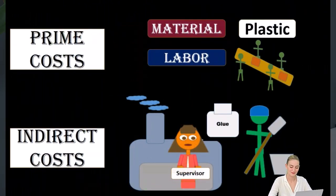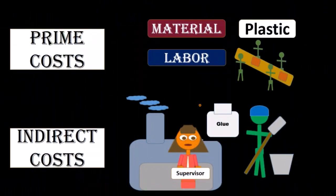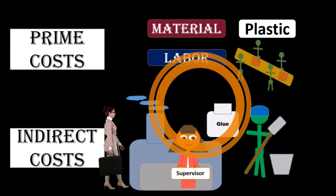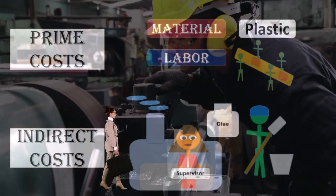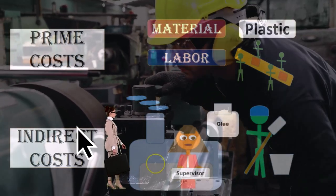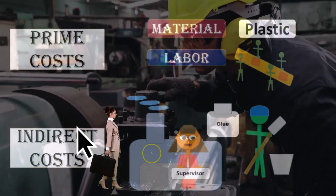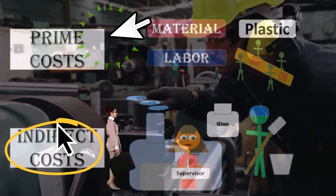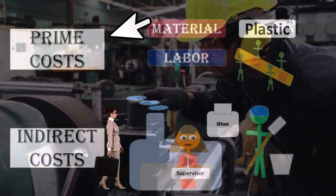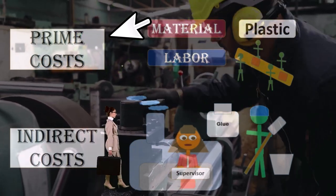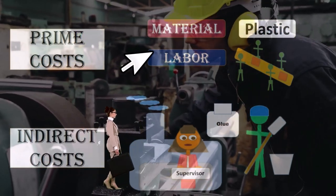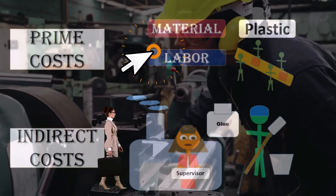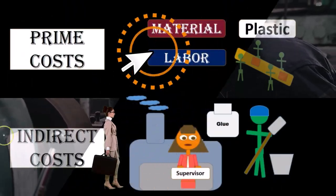We could also have maintenance on the factory. Anything within the factory is going to be indirect. The prime costs are going to be those items such as the plastic — the direct materials and the direct labor.